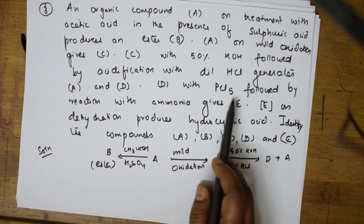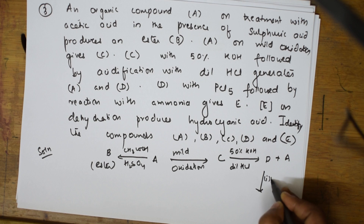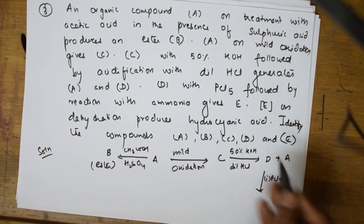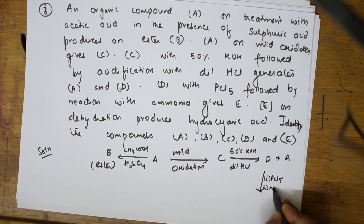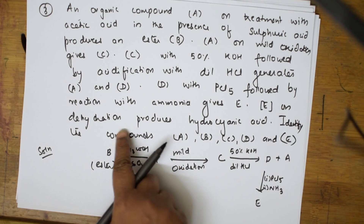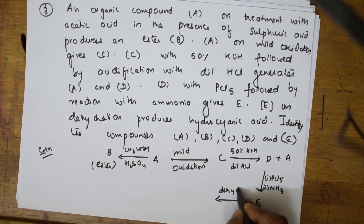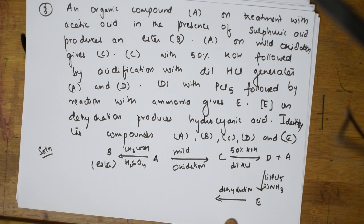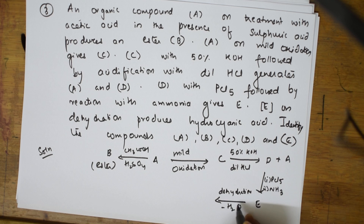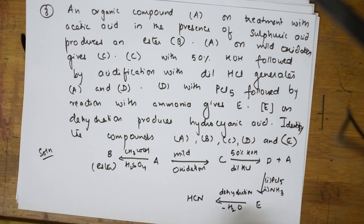It has given two products — one is D and it has given A also. After that, D was treated with PCl5 followed by reaction with ammonia, and it has given a product E. Now, E on dehydration — dehydration means removal of water — produces hydrocyanic acid, HCN.